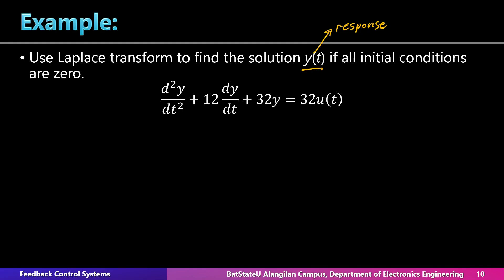What is the input to the system? The input is the term on the right-hand side of the equation. This system has a constant input with a magnitude of 32. Multiplying the input by u(t) means that the input is present only from t equals zero onwards — there are no inputs for negative values of t. This implies the output will also start from zero; there will be no output for values of t less than zero.